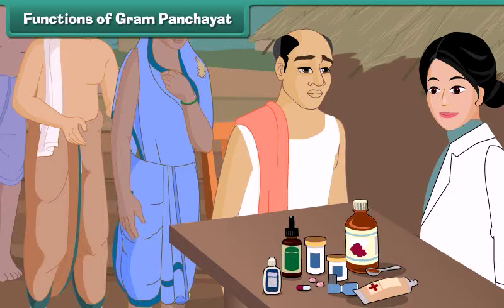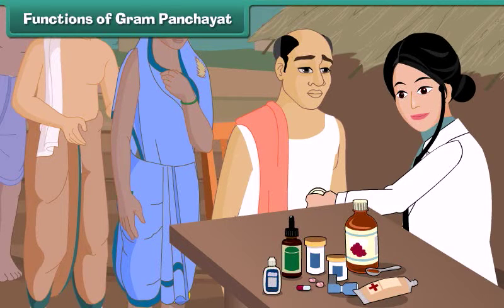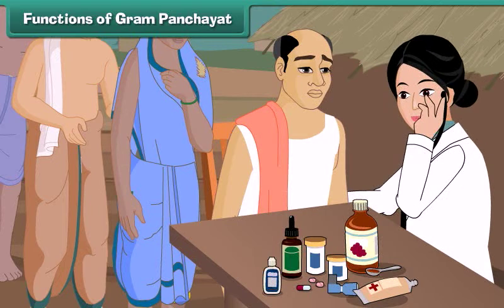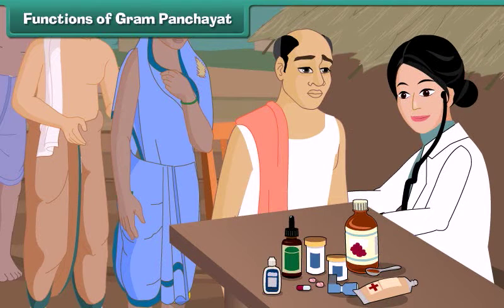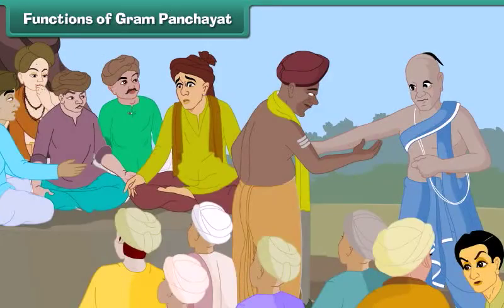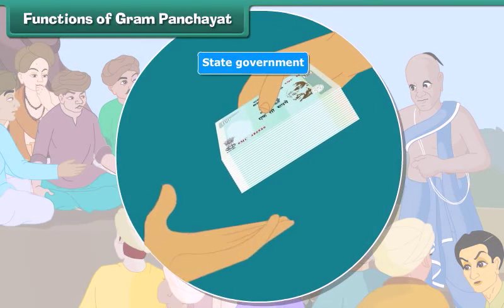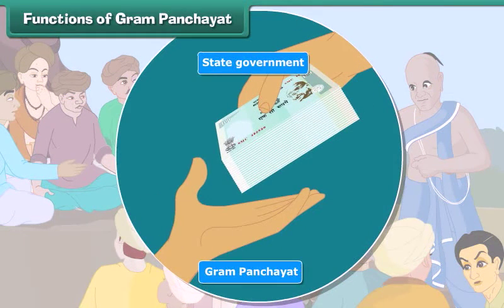The Gram Panchayat provides facilities for maintaining public health and hygiene and organizes health programs for its people. It also maintains law and order in the village. For performing all these functions, the Gram Panchayat receives funds from the state government.